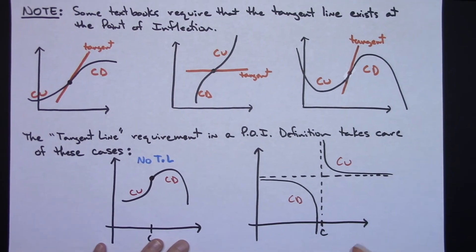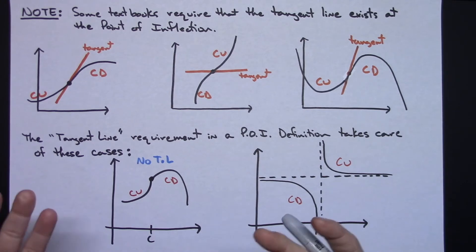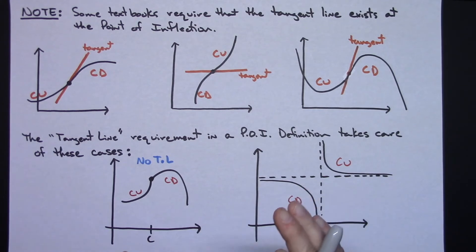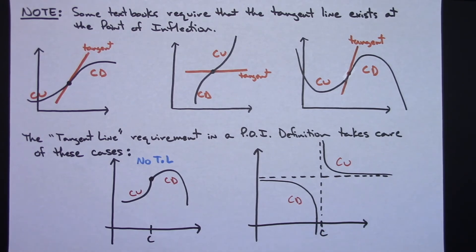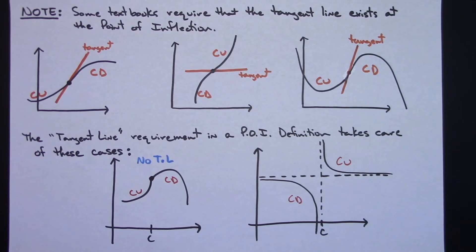That just depends on what textbook you're using and whether they include the tangent line requirement. In summary: second derivative greater than zero means f is concave up; second derivative less than zero means f is concave down. Same with the first derivative — when the first derivative is increasing you get concave up, when decreasing you get concave down. Take some notes on this, then watch part two to see problems worked out algebraically.